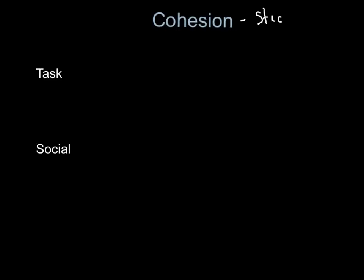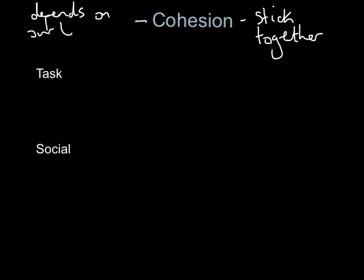Cohesion — if something is cohesive, it sticks. So how well do our players stick together? That is cohesion. Obviously, successful teams have high cohesion; less successful teams have lower levels. One of the key factors affecting cohesion depends on our leaders. There are two types of cohesion, so let's look at each in turn.